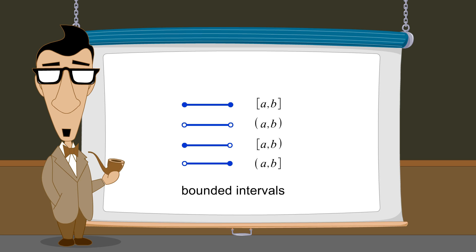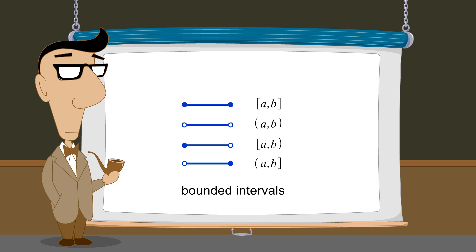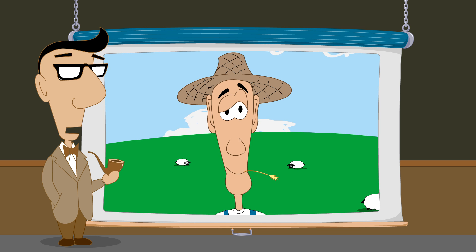Bounded intervals are also called finite intervals since their endpoints limit them to a finite length on the number line. Endpoints create bounds for an interval in the same way that a fence creates a boundary for a plot of land.